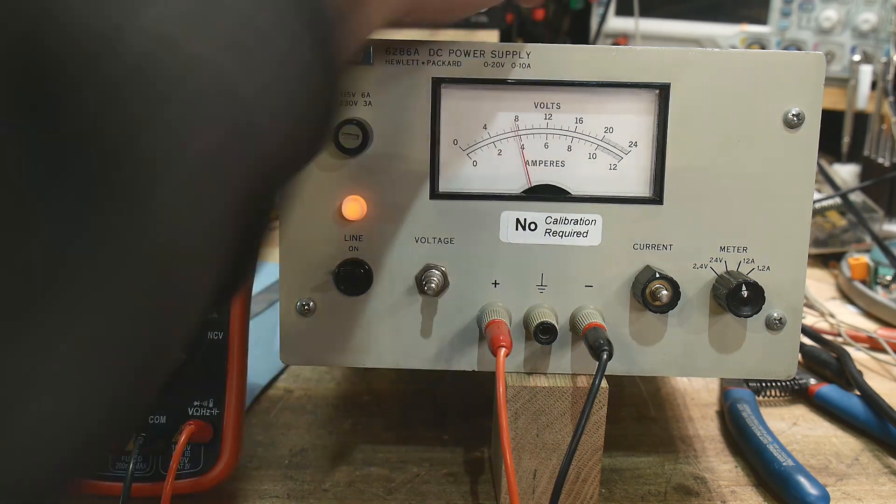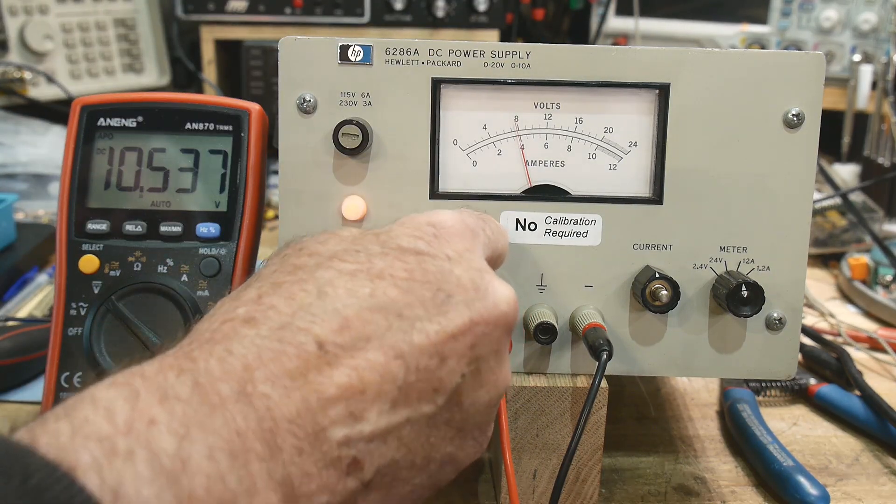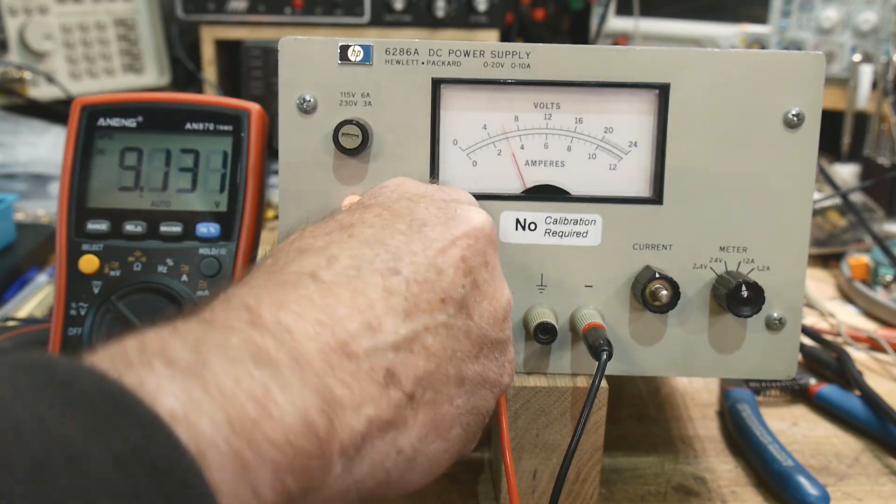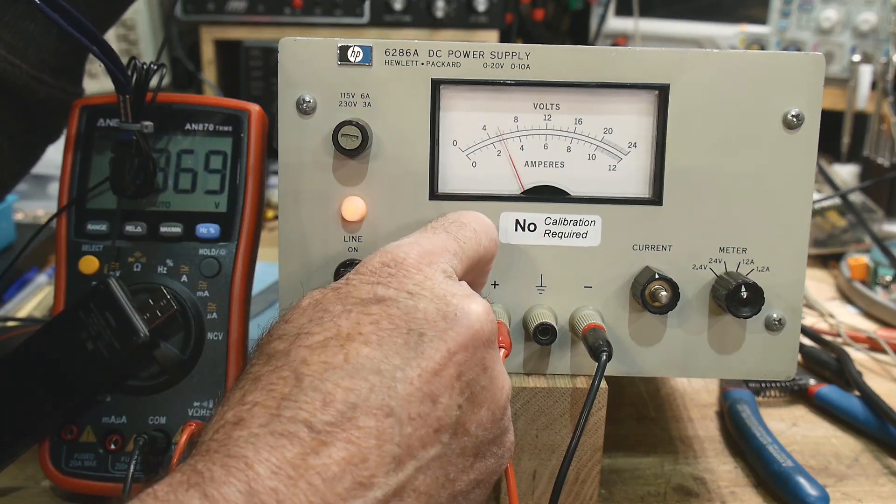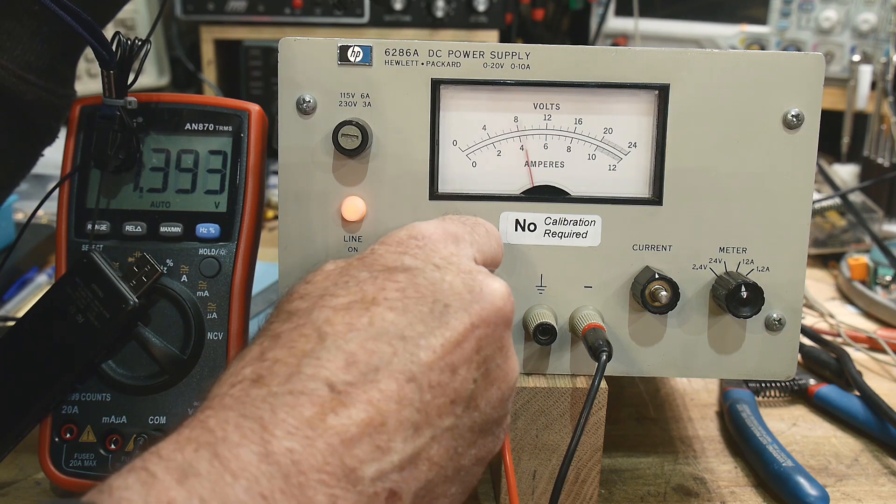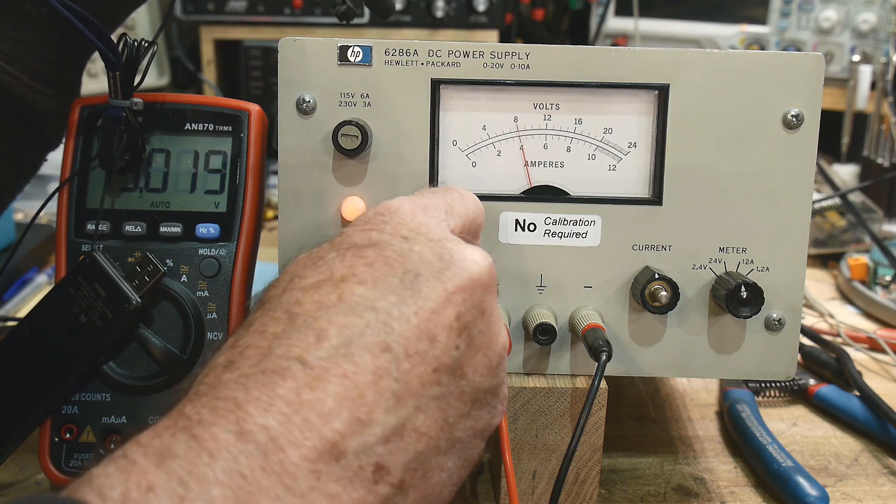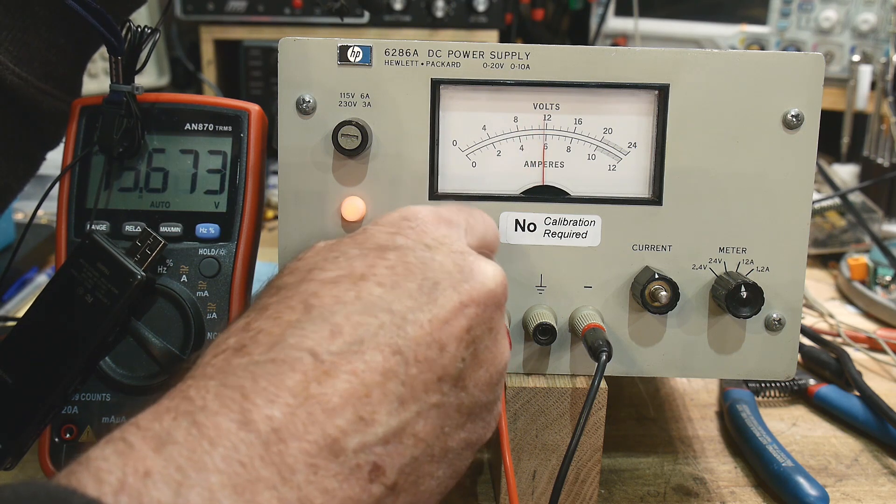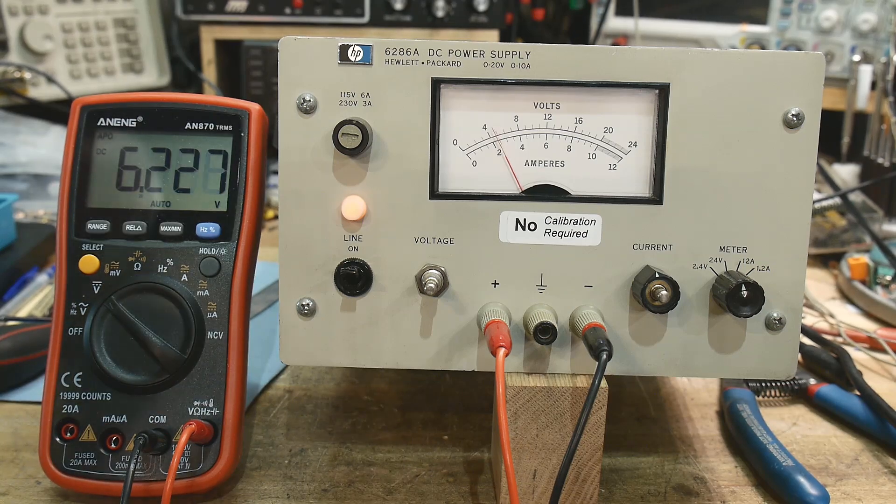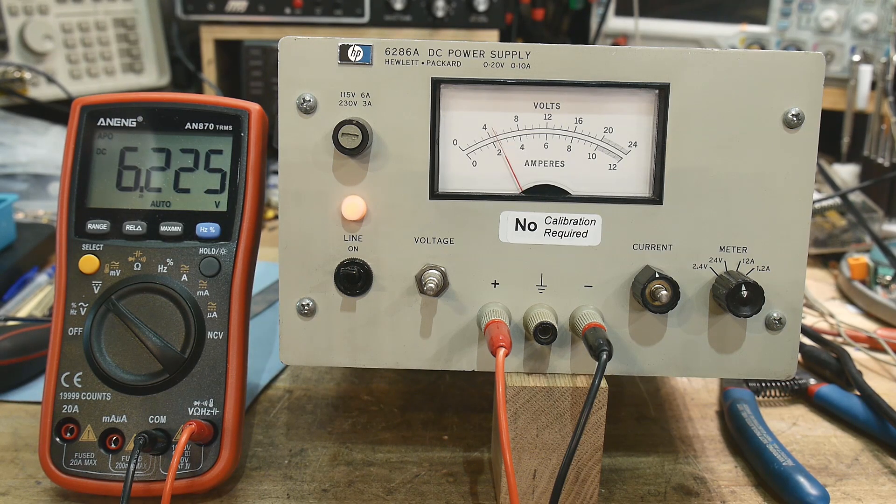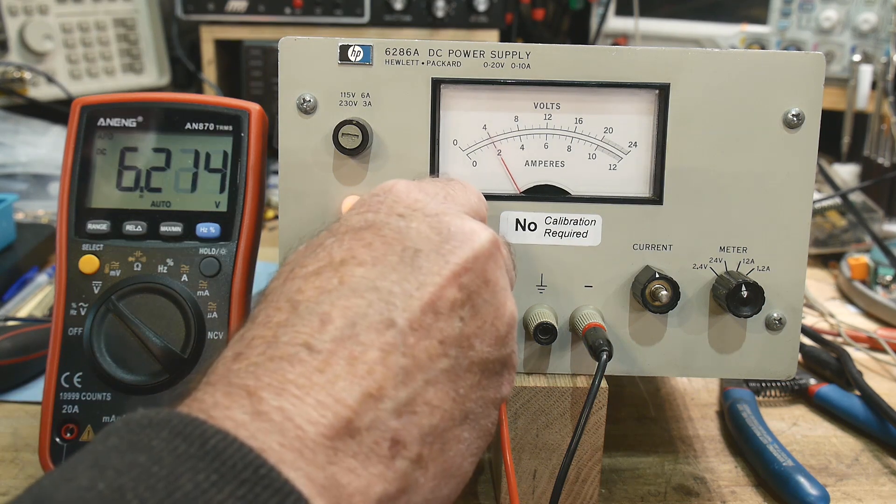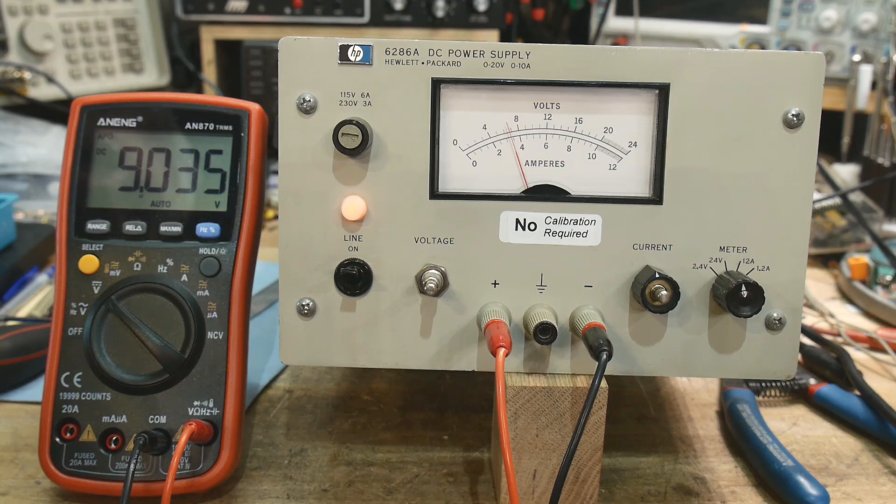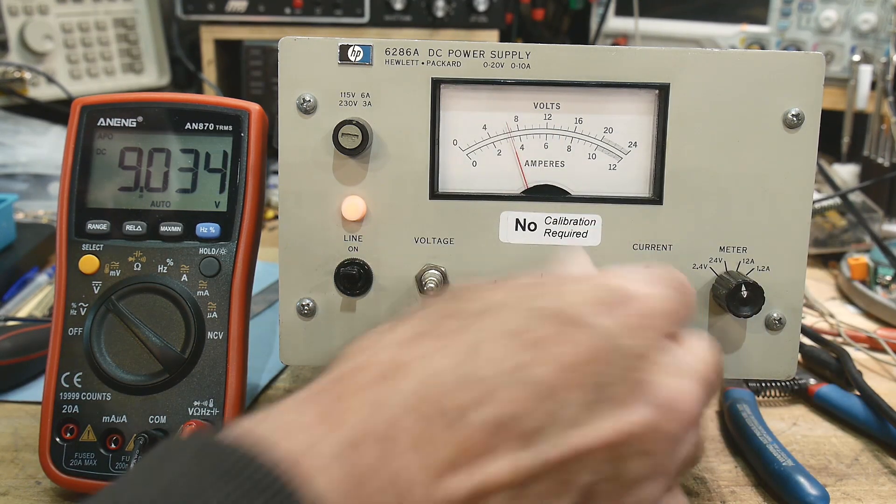It does make buzzy noises like old analog supplies when I change the voltage. Now I don't know if that's normal or maybe the capacitor is really bad on it. I think we'll have to test this thing and see if it is outputting current or not. Put a DC load on it and see if it's operating that way.